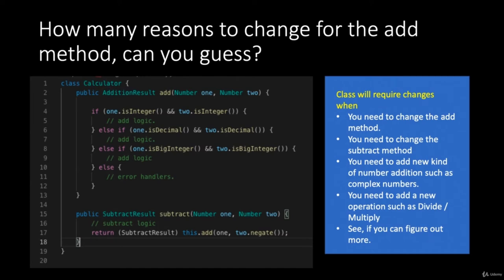If you add more methods like multiply or divide, that still requires your calculator class to change. Whenever there is a need for modification, there is a risk involved. You can see why this class is not following the Single Responsibility Principle — it has five or more reasons to change.